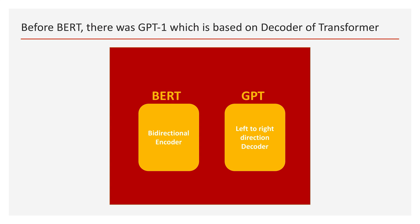There is an interesting history of why BERT came out with a bidirectional encoder. At this moment, let's just remember there was already GPT-1, which is another great NLP model by OpenAI in 2018, using the left-to-right direction transformer decoder.